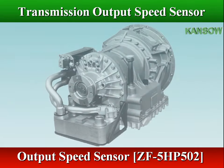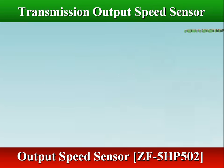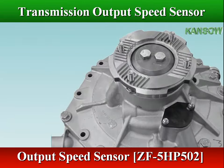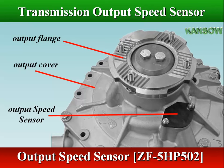In ZF ECOMAT 2 transmissions, the output speed sensor is externally mounted in the output cover and directed at the gear teeth on the planet carrier.